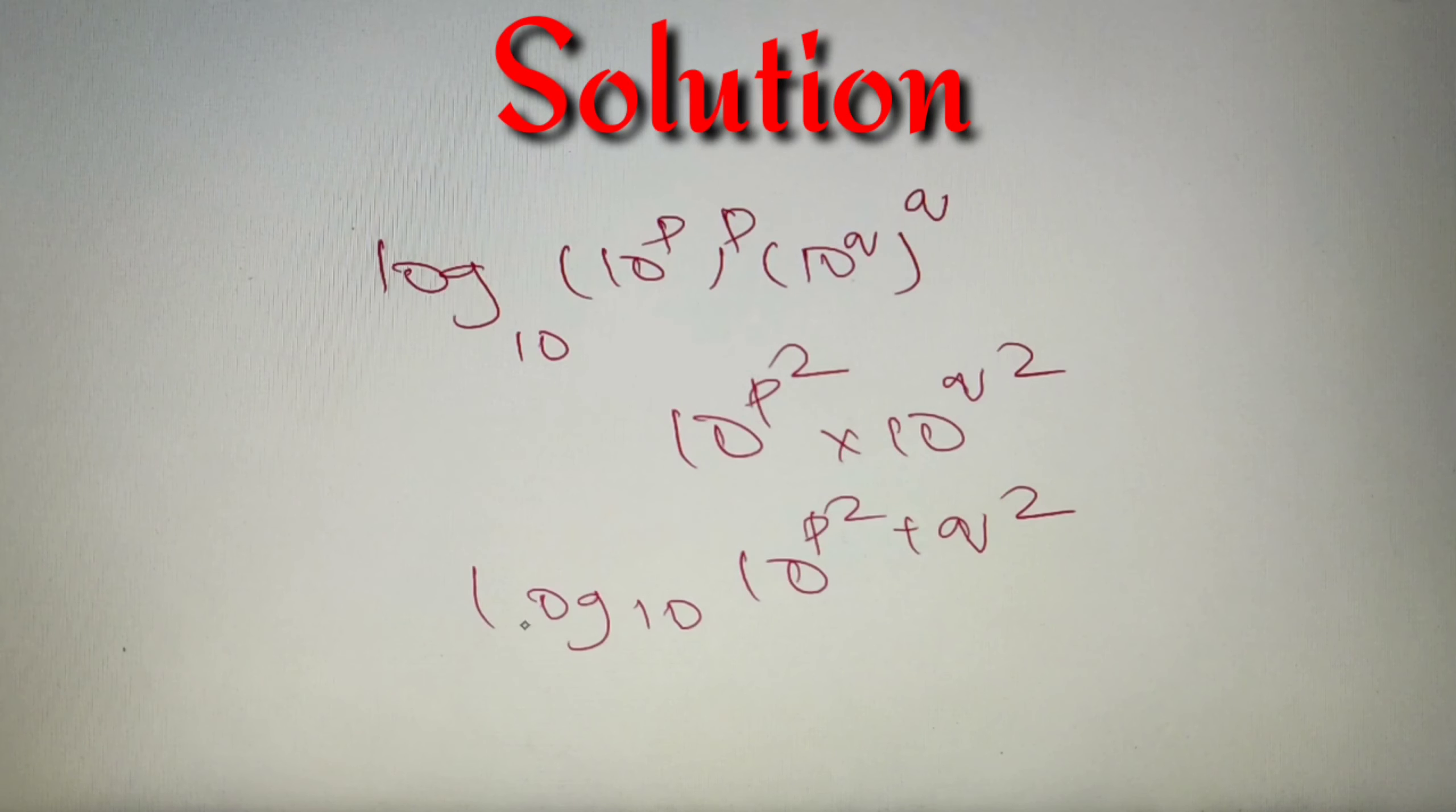Now we know that if the base and this number are the same, then we can write it down as P square plus Q square because they both will eventually cancel each other. So we can say that P square plus Q square is our final answer and according to the given question it is option number A.